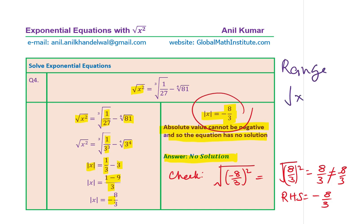What is the range of the square root of x squared? The domain of x is all real numbers, so y equals the square root of x squared means y is greater than or equal to zero. If the right-hand side is negative, then we have no solution. So y greater than or equal to zero is the key condition.